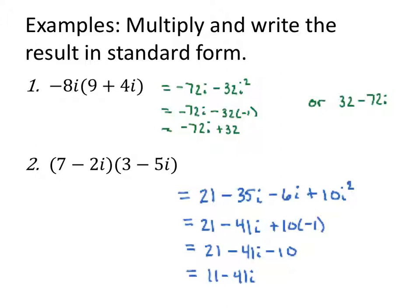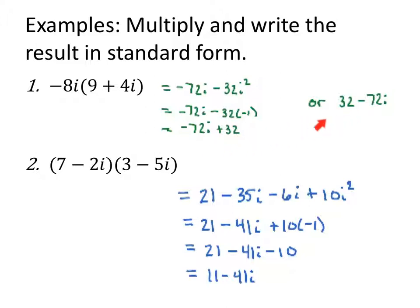Now multiply. We start with a little distributive property here. Negative 8i times 9 is negative 72i. Negative 8i times 4i is negative 32i squared. Don't forget that i squared is negative 1. So negative 72i minus 32 times negative 1 becomes negative 72i plus 32. But traditionally we'll write it in standard form with the real part 32 first, followed by the imaginary part. So 32 minus 72i is a better answer, but they are equivalent.